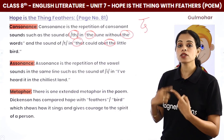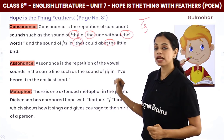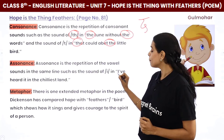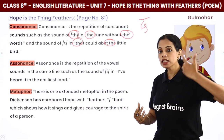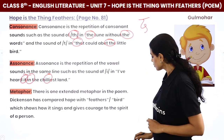Assonance is the repetition of vowel sounds in the same line. For example: 'I have heard it in the chillest land' — here the 'I' sound repeats, and also the short 'i' sound in 'it' and 'chillest' repeats. This repetition of vowel sounds is called assonance.